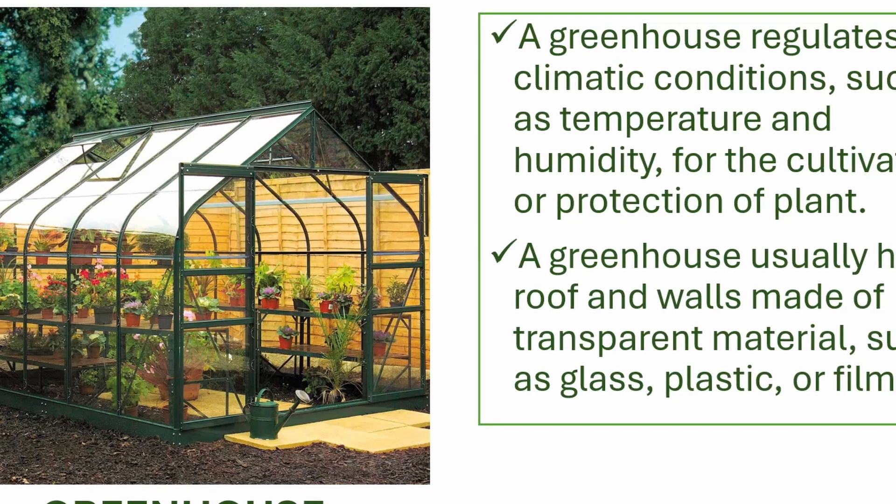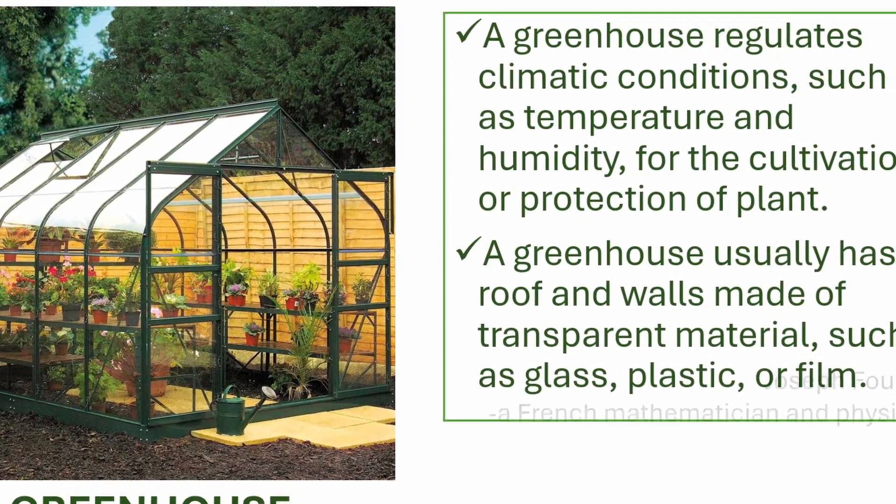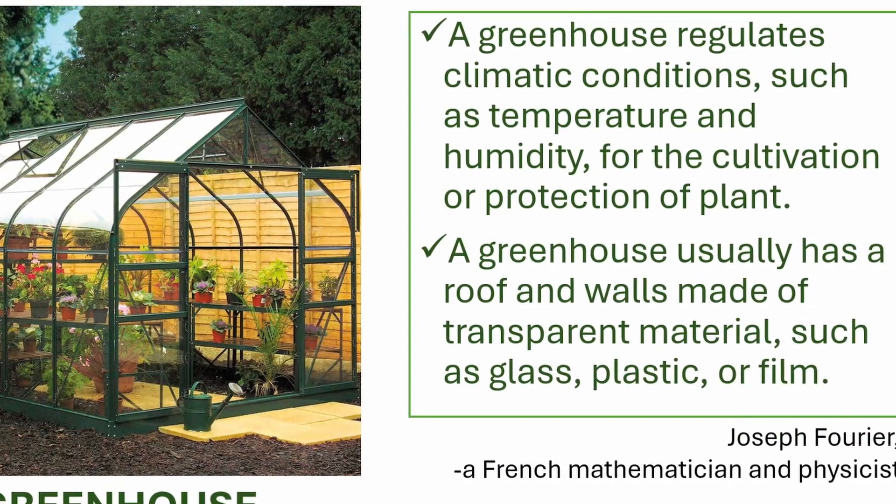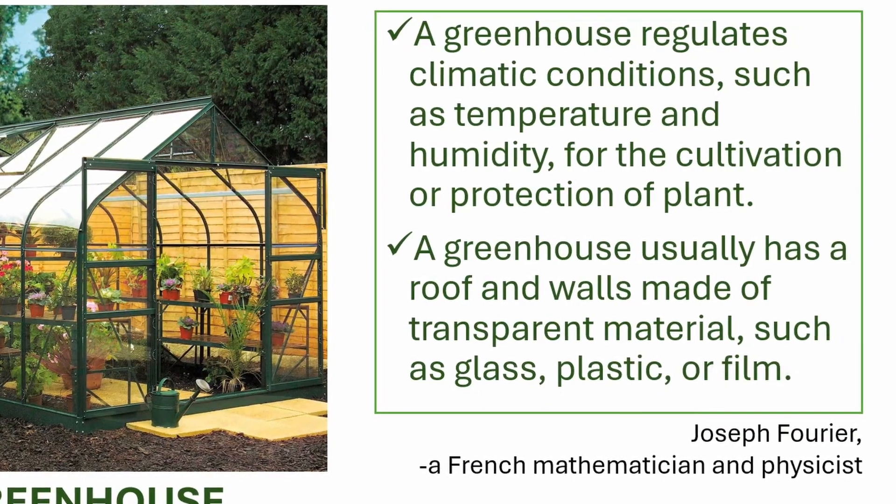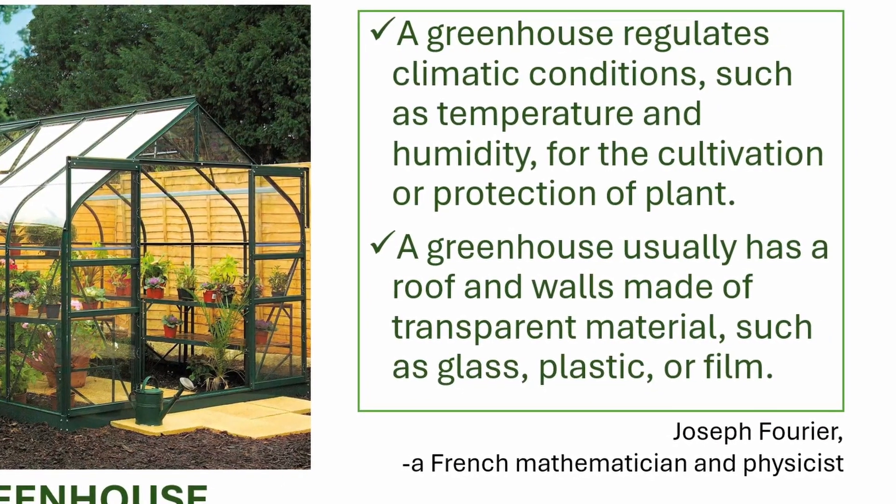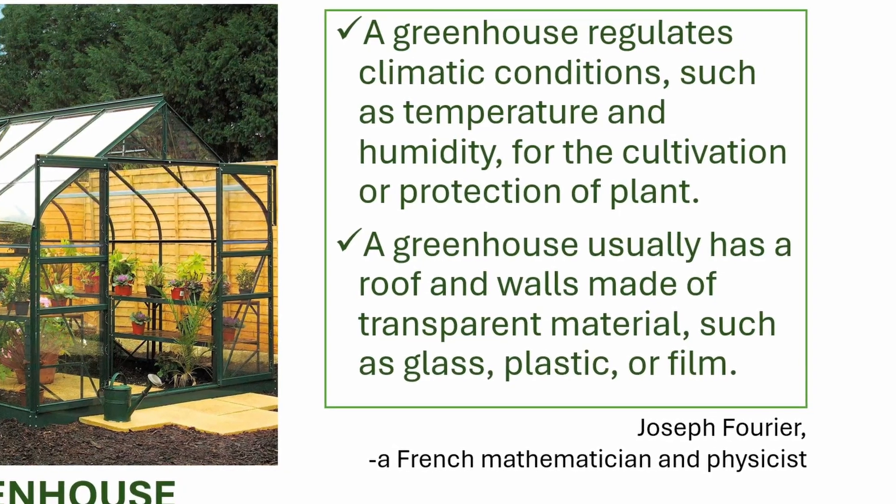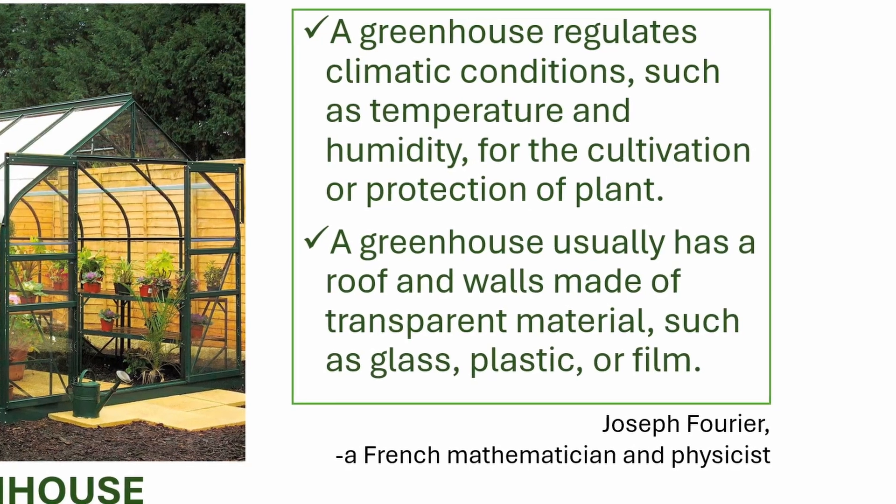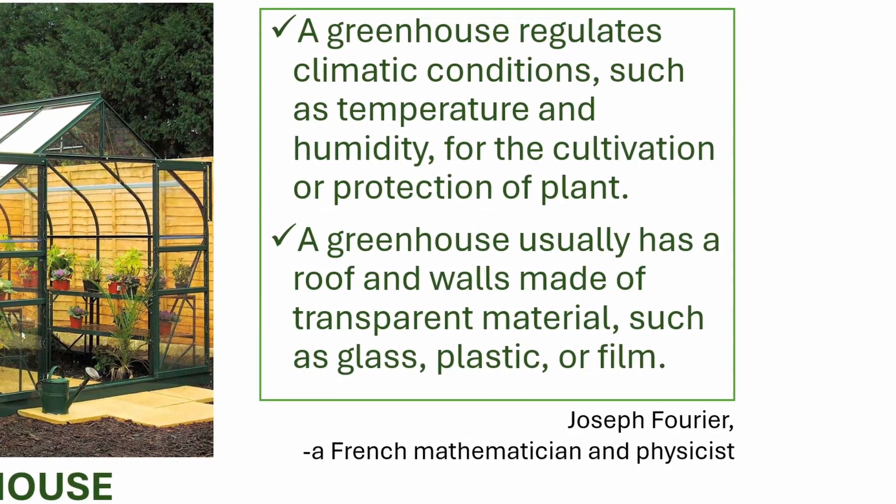In 1827, Joseph Fourier, a French mathematician and physicist, explained why Earth's average temperature is approximately 15 degrees centigrade. Because the two processes are similar, the name greenhouse effect was coined to describe Fourier's explanation.